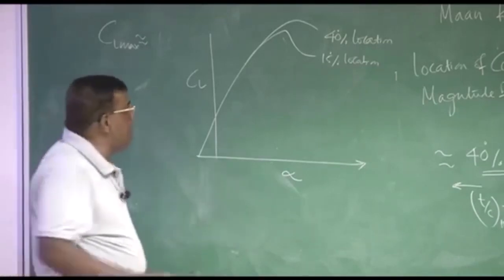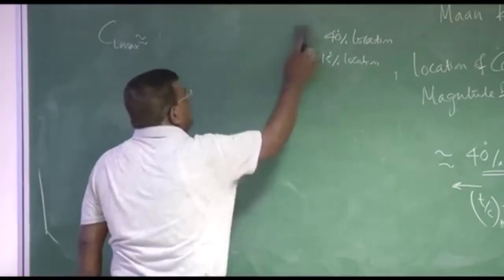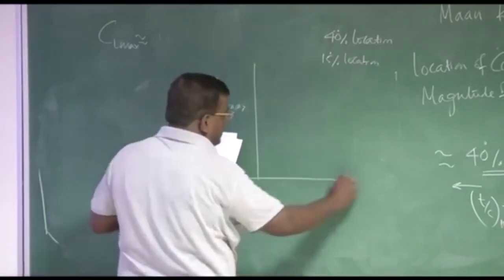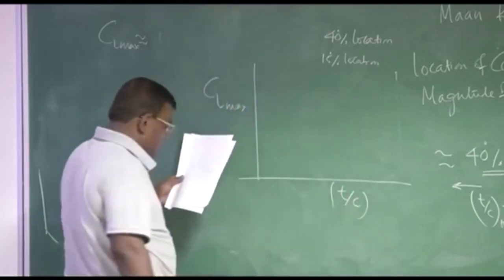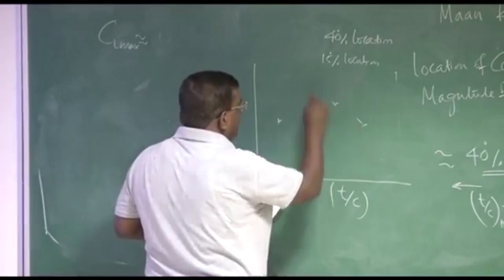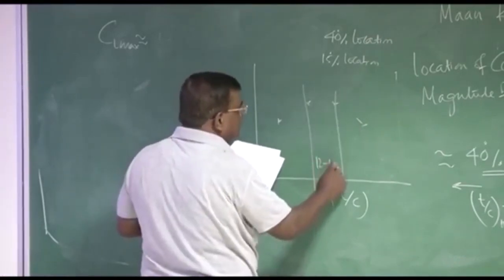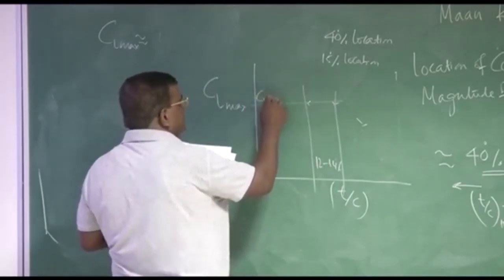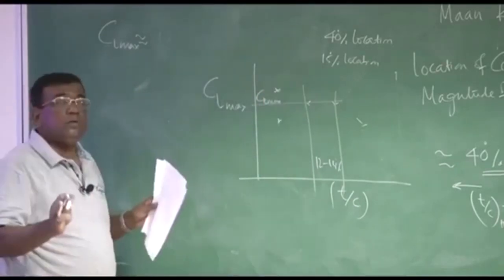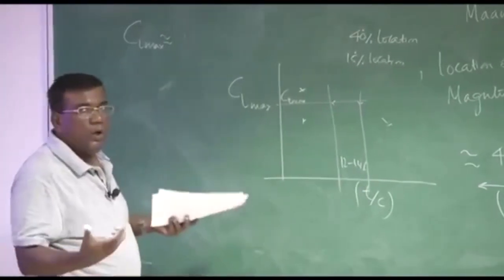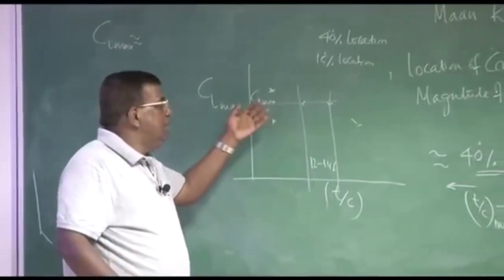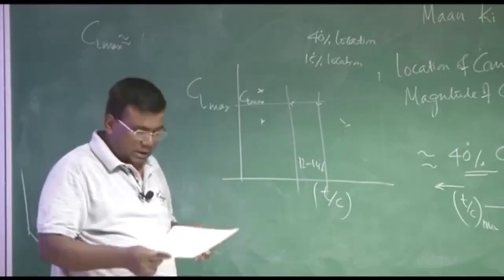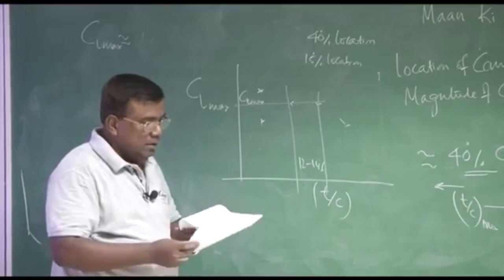And if somebody asked me, I was just checking data set, if I want to know CL max versus T by C, what sort of T by C I should take? Typically you will find around 12 to 14 percent, CL max will be maximum. Generally you get for low speed 12 to 14 percent. Because you know at high speed, CL max is not that important as drag is important, because finally CL by CD is important. So this has to be perceived in that manner.